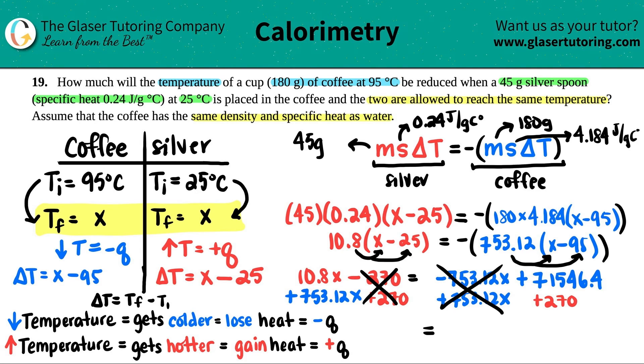Now this is just going back to algebra. X is on one side, numbers on the other. So I will plus the 753.12x on this side. And then I have to move the numbers on the other side. So I'll plus 270 on both sides. And that will get rid of this. So I get 10.8 plus 753.12, I get 763.92x equals 71546.4 plus 270, which is 71816.4. Finally, solve for the x by dividing by 763.92. This cancels out. And 71816.4 divided by 763.92, I get roughly 94.